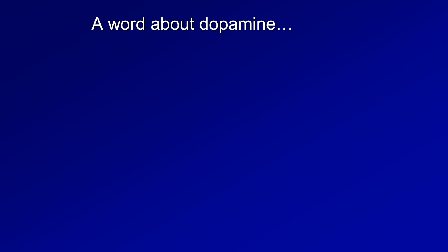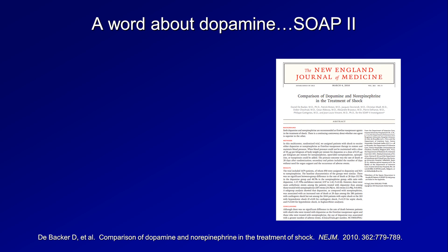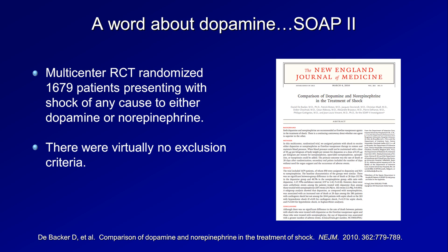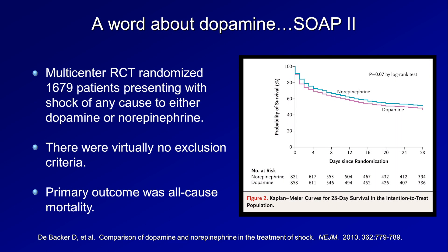Now about dopamine, its use in cardiogenic shock, and the SOAP2 trial — Sepsis Occurrence in Acutely Ill Patients. This was a multi-center RCT with 1,700 patients presenting with shock of any cause, randomized to dopamine versus norepinephrine, with virtually no exclusion criteria. The primary outcome was all-cause mortality at 28 days. On the surface the trial seems robust — relatively large, randomized, blinded, few exclusion criteria, and a hard clinically relevant endpoint. The survival curves between norepi and dopamine were statistically identical, though notably about half of participants died within a month.